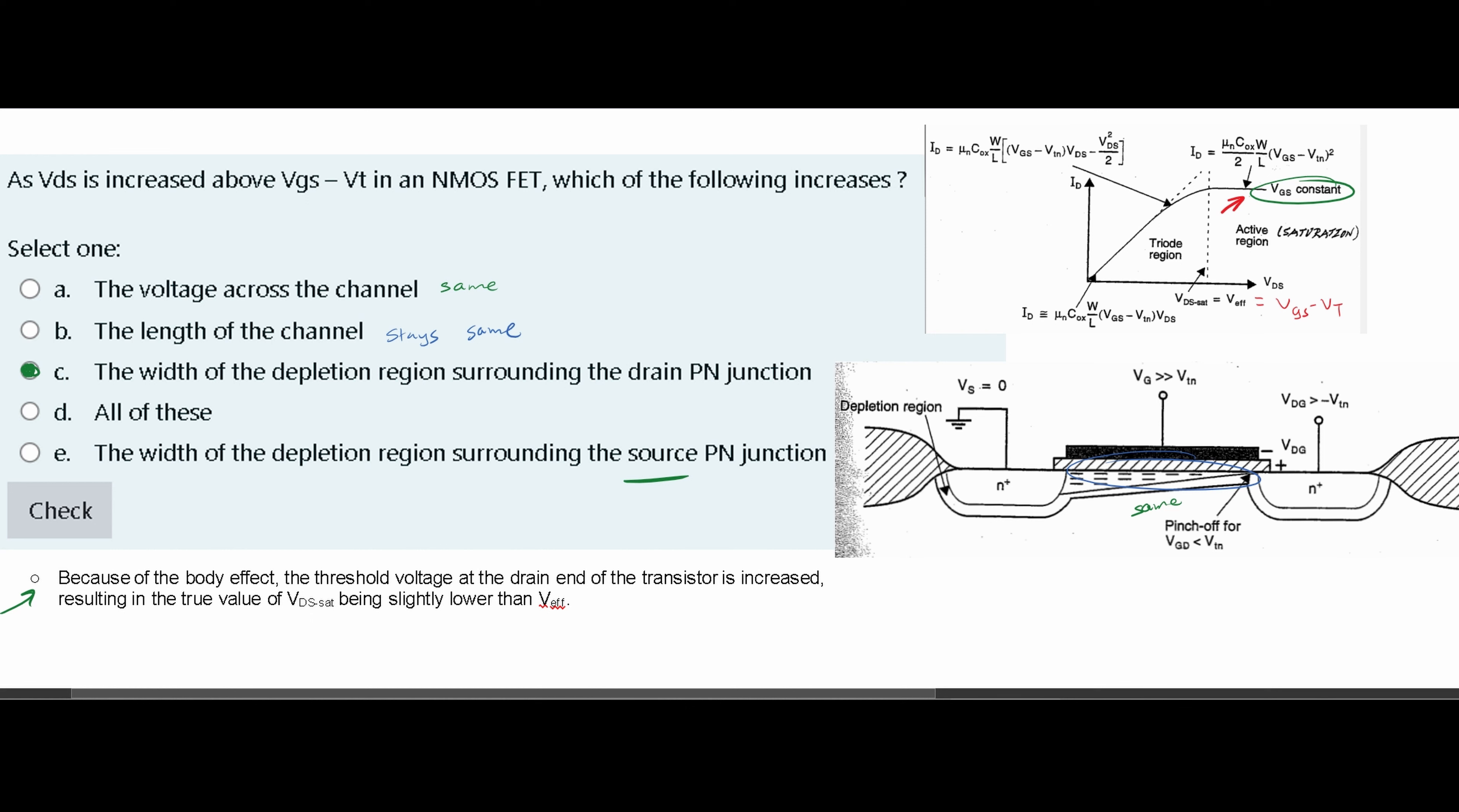VGS, the gate source, it's constant. So voltage across channel, it's constant. Length of the channel doesn't change. The width of the depletion region surrounding the drain does increase though.